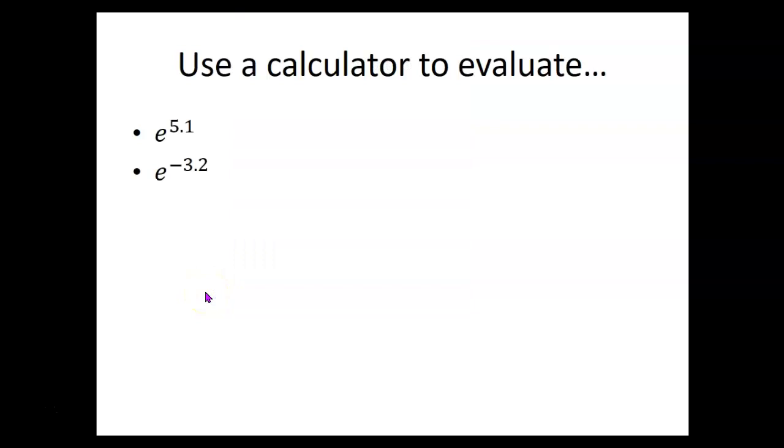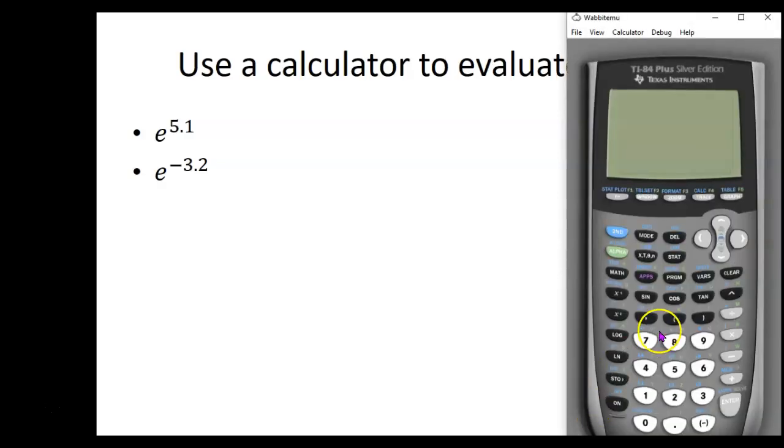So let's try this out. Let's evaluate e to the 5.1. If you've got your calculator handy, try doing this and making sure that you get the same thing I do. So I'm pushing second LN and it shows up as e to the, I'm putting in 5.1 and it shows up as 164.0219073, so 164.02 approximately.